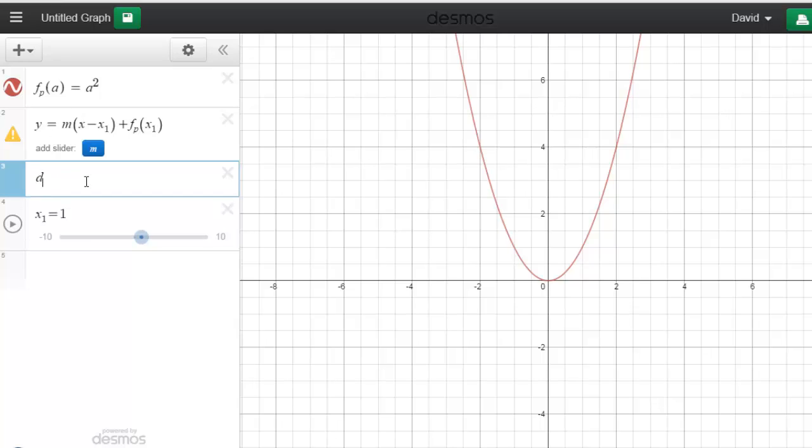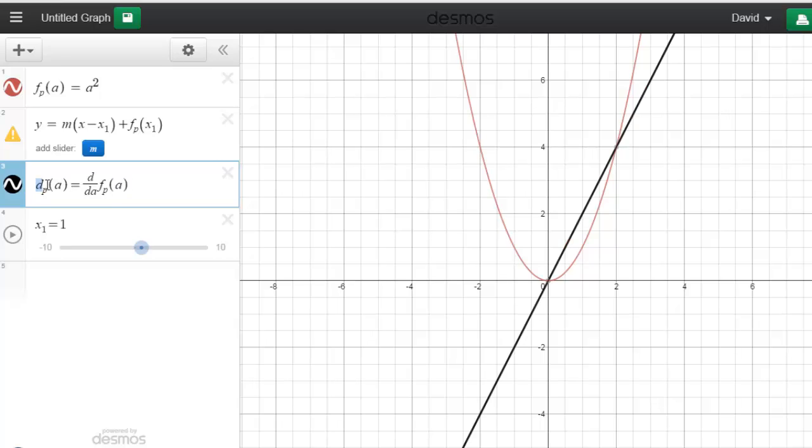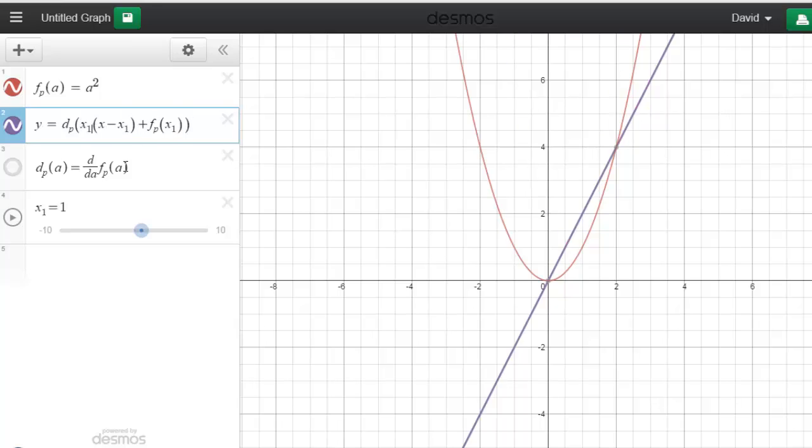My slope is going to be the derivative function. So let me actually add a new expression for the derivative. So I'm going to call d sub p as a function of a. I'm going to call that dda of f sub p of a. So I've just defined a new function to be the derivative of my old function. I'm going to click this so that I don't actually display it. You can control what things display and don't display. I'm just creating this function so that I have an easy way to evaluate the derivative. I want my slope to be the derivative evaluated at x1. And so now you see I've got my equation for the line. I've got the slope which is being evaluated live as my x1 values change. And I've got my y value at that point. And as I move it around, you see you've got the tangent line there.